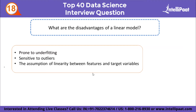What are the disadvantages of linear models? First, they are prone to underfitting — a situation where the model fails to capture the data properly because the hypothesis function can't fit the data well. Second, they are sensitive to outliers, which are anomalies or extreme values that deviate from other data points; outliers can damage model performance and lead to low accuracy. Third, they require the assumption of linearity between features and target variables.